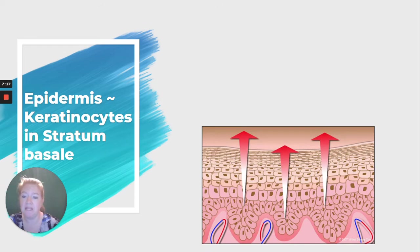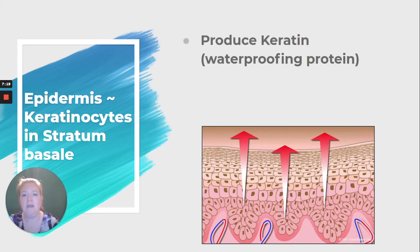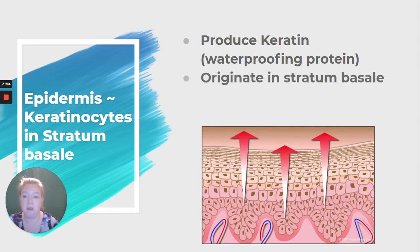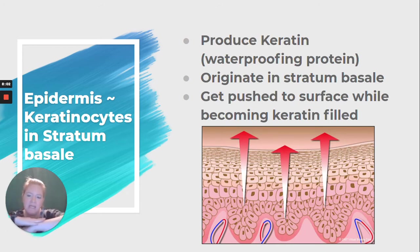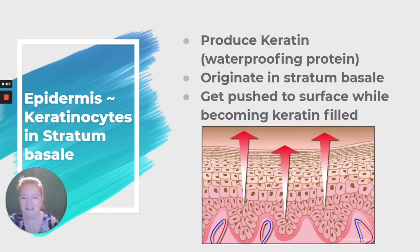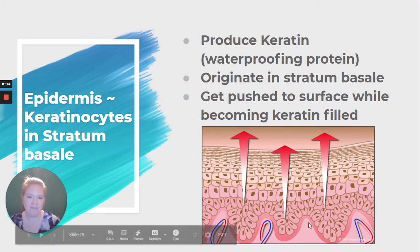We also have keratinocytes, and they are going to produce keratin, that waterproofing protein. They originate in the stratum basale, that single layer, and get pushed to the surface as they become filled with keratin. So the oldest cells in your skin are at the surface and they're going to flake off, while the youngest cells are down in the stratum basale where all that division is happening — old at the top, young at the bottom.